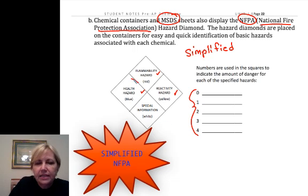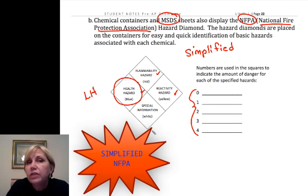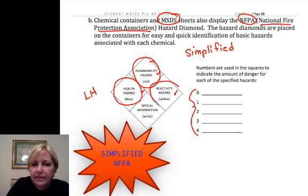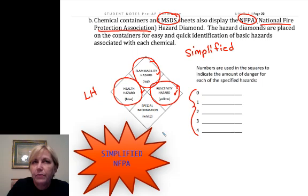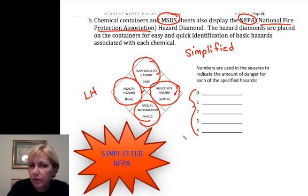The first is the left-hand diamond — you should know this by position, not just color, because we can't print in color on your quizzes. The left position is the health hazard. The top is the flammability hazard. The right is the reactivity hazard — how chemically reactive it is, like sodium metal in water being explosively reactive. And the bottom diamond is for very special information we want to communicate.